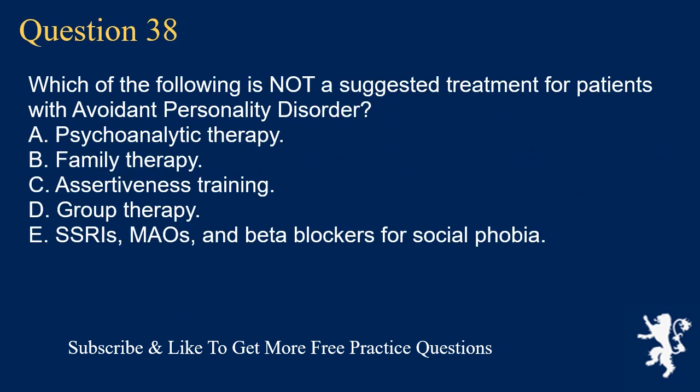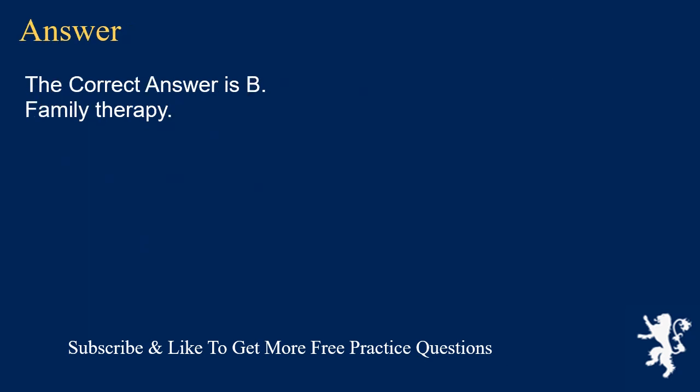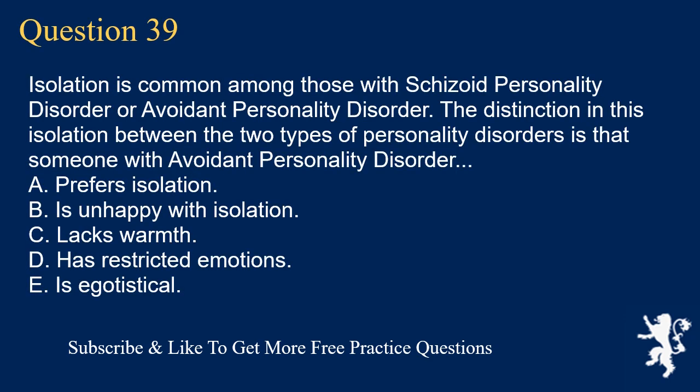Question 38. Which of the following is not a suggested treatment for patients with avoidant personality disorder? A. Psychoanalytic Therapy. B. Family Therapy. C. Assertiveness Training. D. Group Therapy. E. SSRIs, MAOIs, and Beta Blockers for Social Phobia. The correct answer is B. Family Therapy.